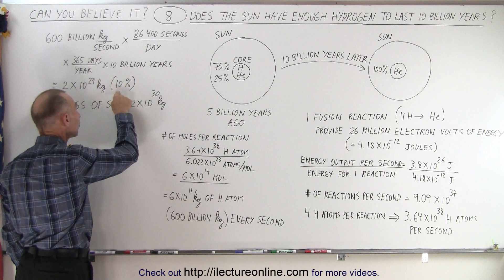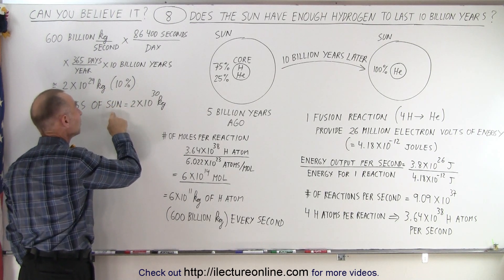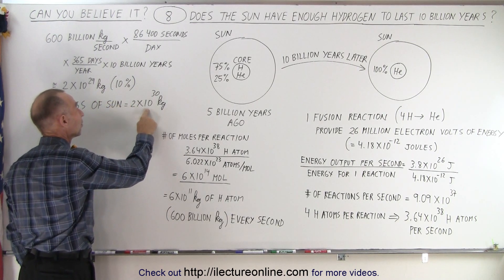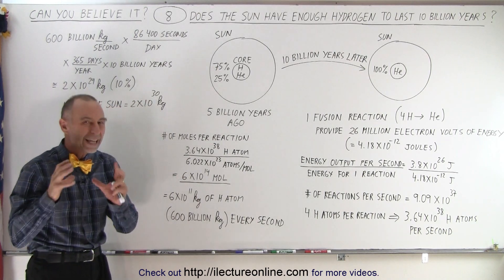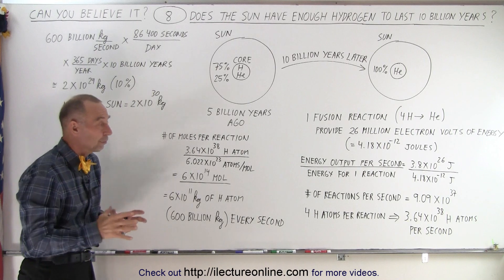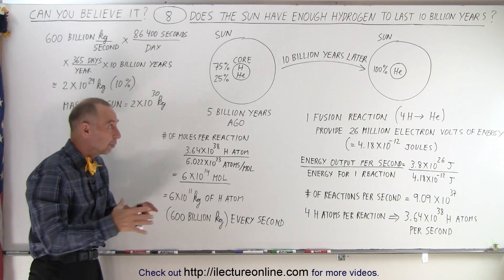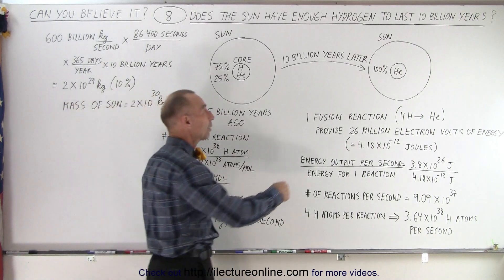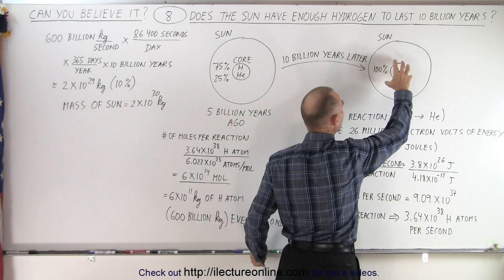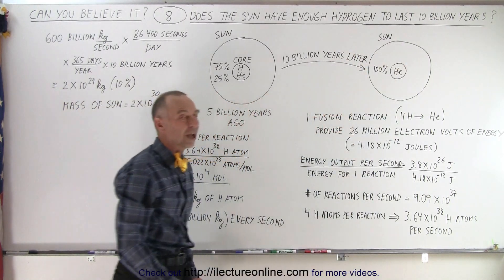Now, it turns out that that is 10% of the Sun, because the Sun has a mass of 2 times 10 to the 30th kilograms, about 10 times as much. So 10% of the mass of the Sun is converted from hydrogen to helium over 10 billion years, and at that point, the entire core will have filled with helium, and that process will then stop.